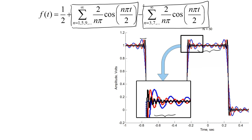Zooming in shows us that the maximum difference close to the edge really isn't getting smaller, and it turns out that it won't get smaller as I add more terms either. The error between the two at a discontinuity stubbornly stays at a little over 10% of the change of the value of the function.